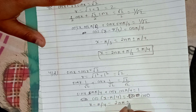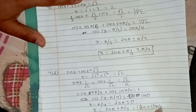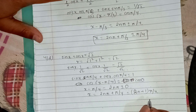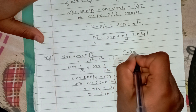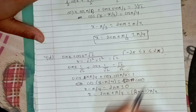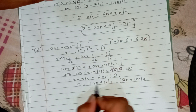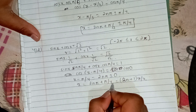Since cos theta equals 1 means theta equals 0, we get 2n pi plus minus theta equals 0. So x minus pi by 4 equals 2n pi, giving x equals 2n pi plus pi by 4, which equals 8n pi by 4 plus pi by 4.